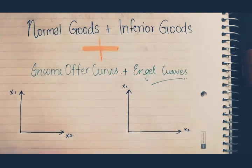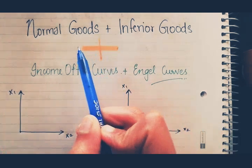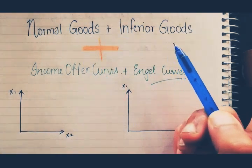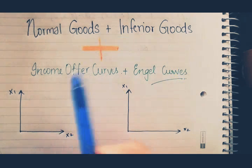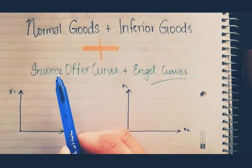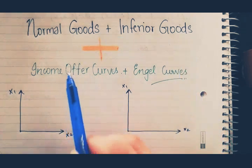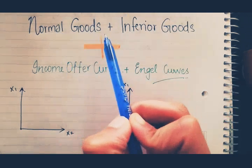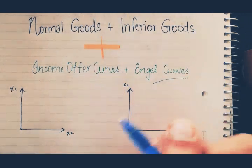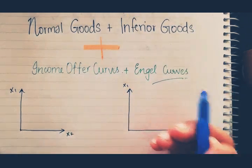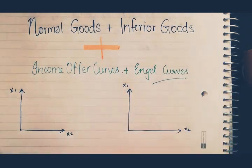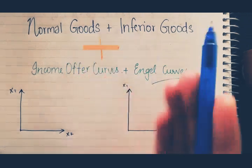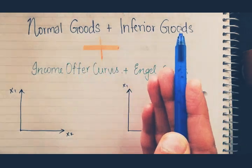In this video we're going to be talking about normal goods and inferior goods, and two other curve diagrams — the income offer curves and Engel curves associated with these two goods. Before I get into the curves, I just want to give you a short reminder on what normal goods are and what inferior goods are.